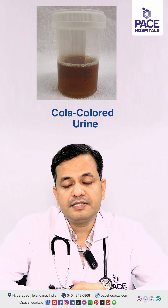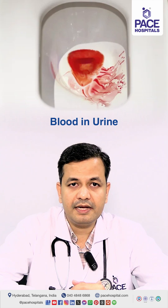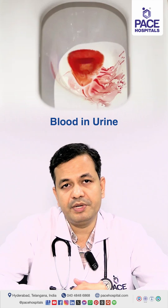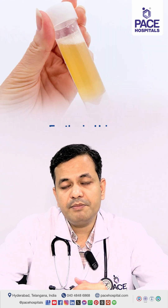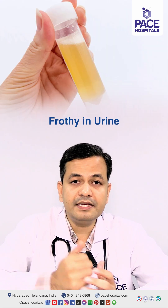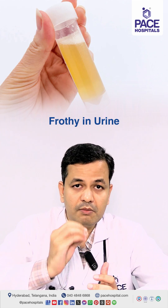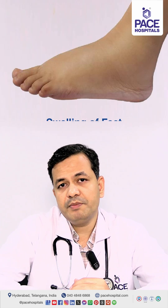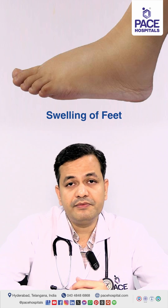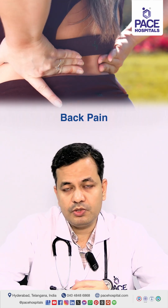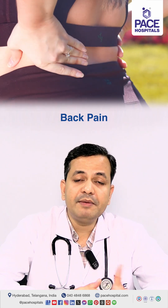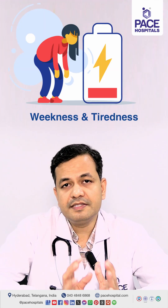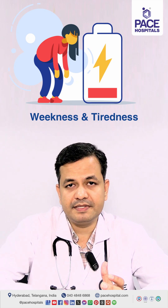The second symptom is sometimes patients can have blood in the urine — a dark red color or reddish tinge in the urine can be seen in few patients. Along with this, some patients may have frothing in the urine, like more bubbles in the urine after passing urine. And along with this, few patients can have swelling of the feet, or some patients can have back pain. There may also be symptoms of decreased urine output, weakness, or tiredness. These are the symptoms of IgA nephropathy if they present.